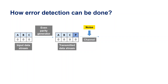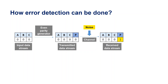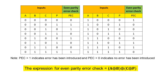Note that an error can occur to any bit A, B, or C. Since an even parity generator was used at the transmission end, an even parity checker will be used at the receiver end. The received data stream A equals 0, B equals 0, C equals 0, and P equals 1 is applied to the even parity checker. If the output of the even parity checker, PEC (parity error check), equals 1, it indicates the received signal has an error. While PEC equals 0 indicates the received signal is correctly received.